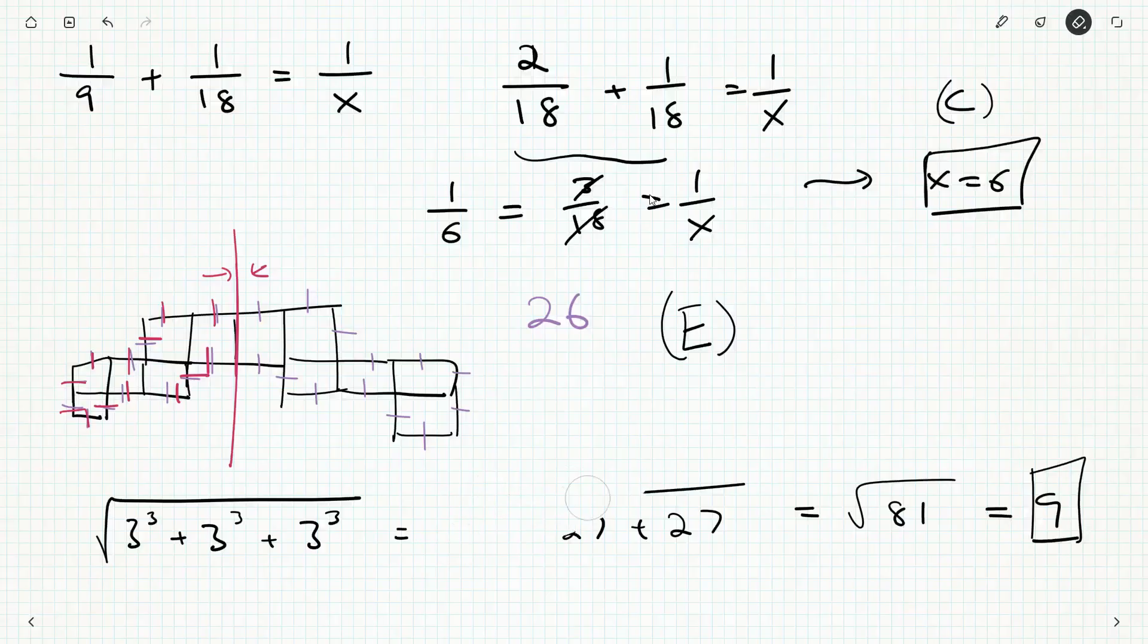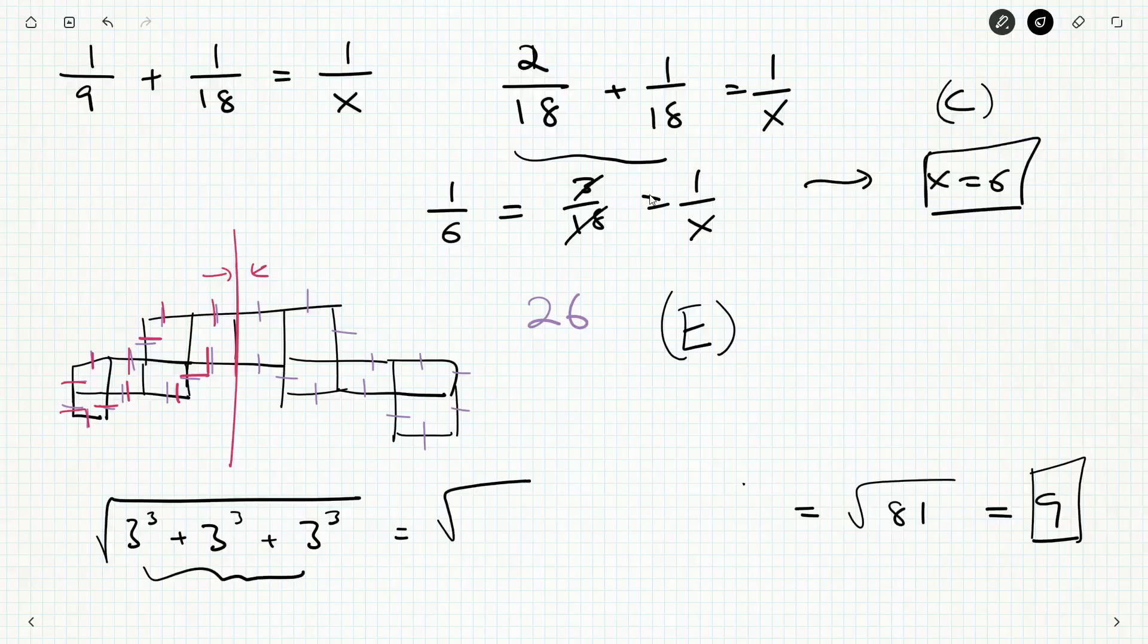Here's a slightly faster way to do it if you want to try and do it in your head. What have we got here? We've got three three to the threes, so we've got three three to the three, but that first three is really three to the one, so this is going to be three to the four.